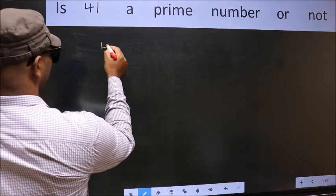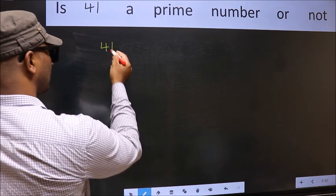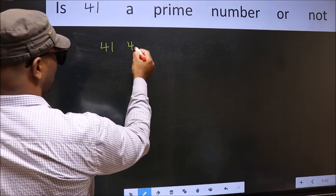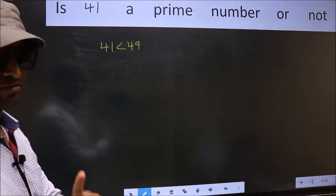Given number is 41. This is close to which perfect square number? This is close to 49. This is your step 1.